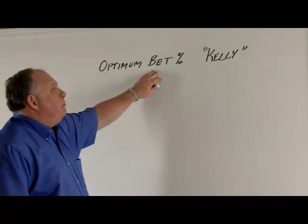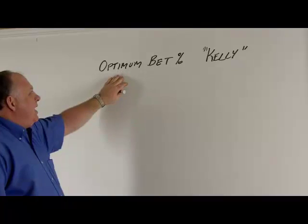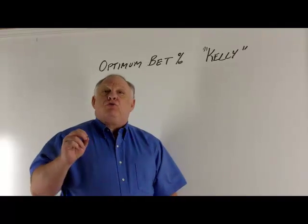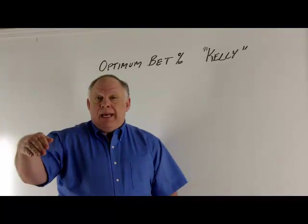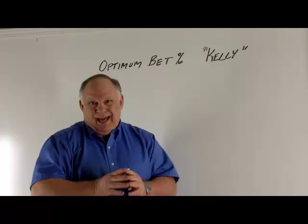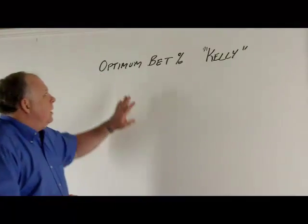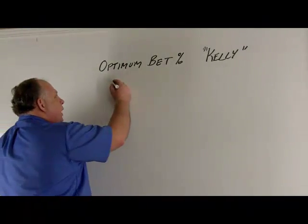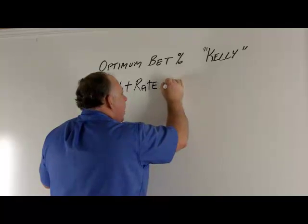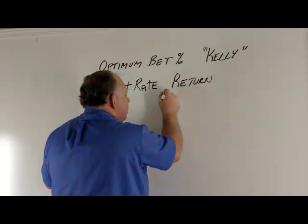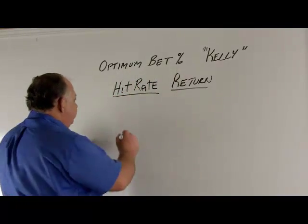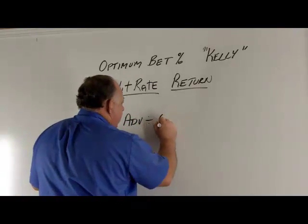Next up is Optimum Bet, or the Kelly Criterion. Optimum Bet is that percentage of your bankroll that will lead to the greatest growth. If you bet less money or more money, you actually wind up with less return in the long run — less profit. If we know our hit rate and our return per wager, we can compute our advantage. An optimum bet is simply advantage divided by odds.